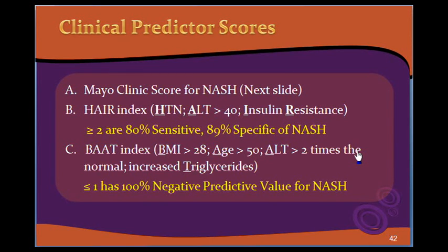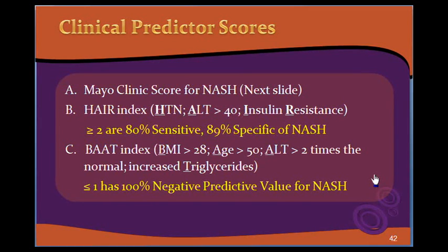The other index is the BAT index. B is for BMI more than 28, A is for age more than 50, another A is for ALT more than 2 times the normal value of SGPT, and T is for triglycerides. If you combine BMI, age, ALT, and triglycerides into an index, a score of 1 or less than 1 has 100% negative predictive value for NASH — meaning if the patient has one or none of these factors, the chances of having NASH are 100% negative.